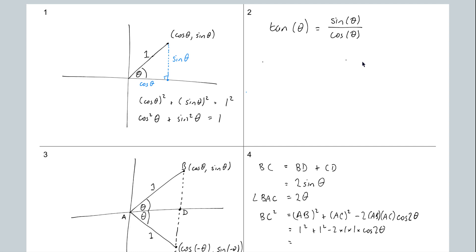That's equal to 2 minus 2 cos 2 theta. So Bc squared equals 2 minus 2 cos 2 theta, and Bc equals the square root of 2 minus 2 cos 2 theta. But from earlier, Bc is actually 2 sin theta. So 2 sin theta equals the square root of 2 minus 2 cos 2 theta. Squaring both sides gives 4 sin squared theta equals 2 minus 2 cos 2 theta.